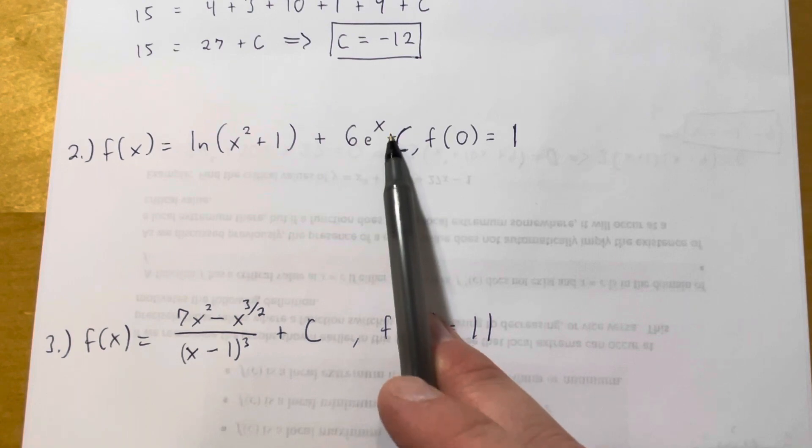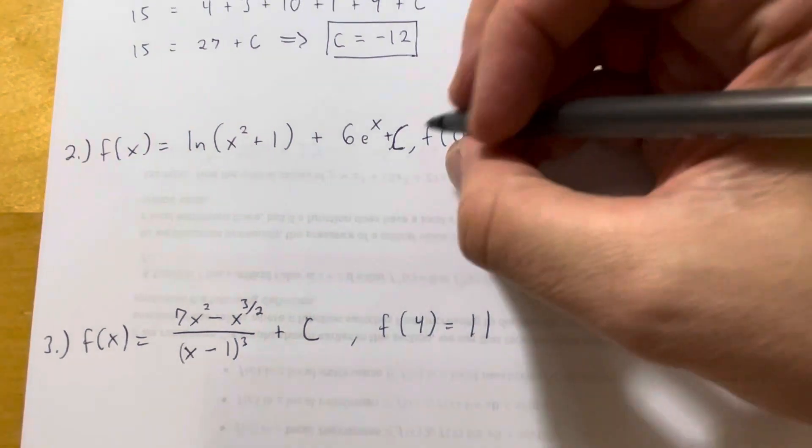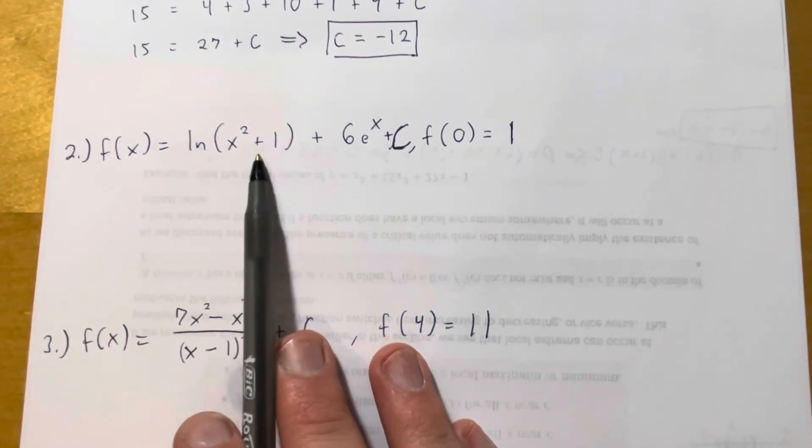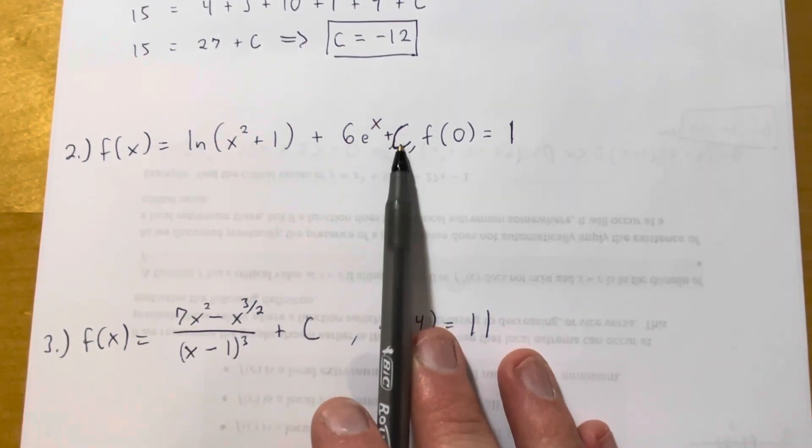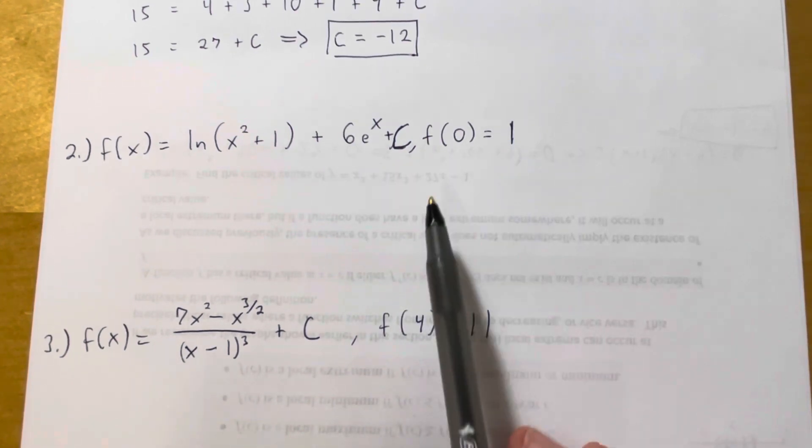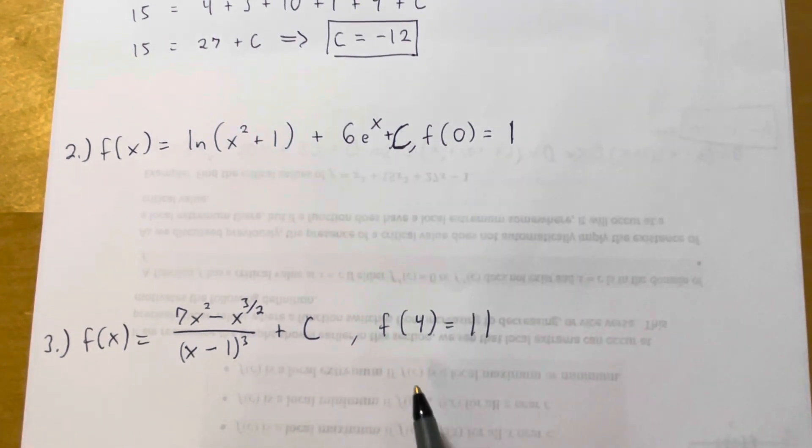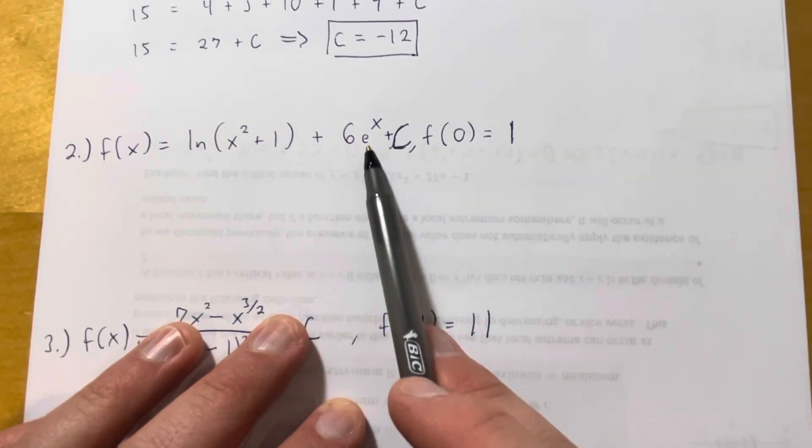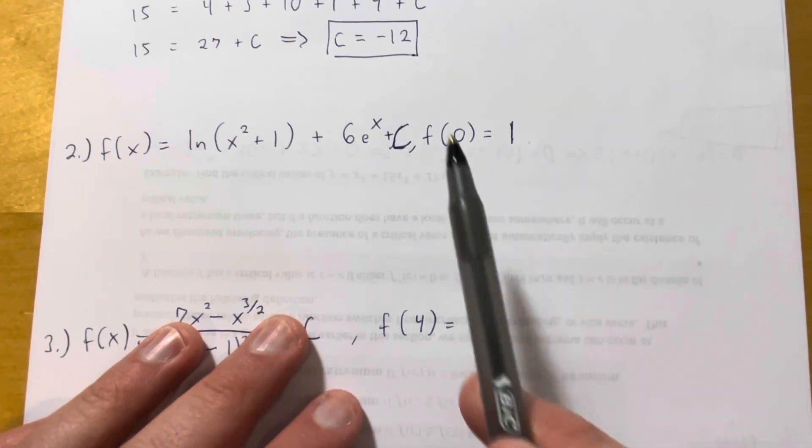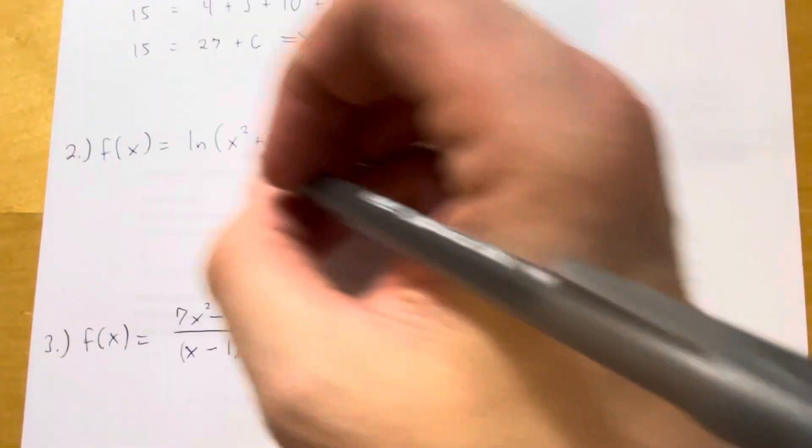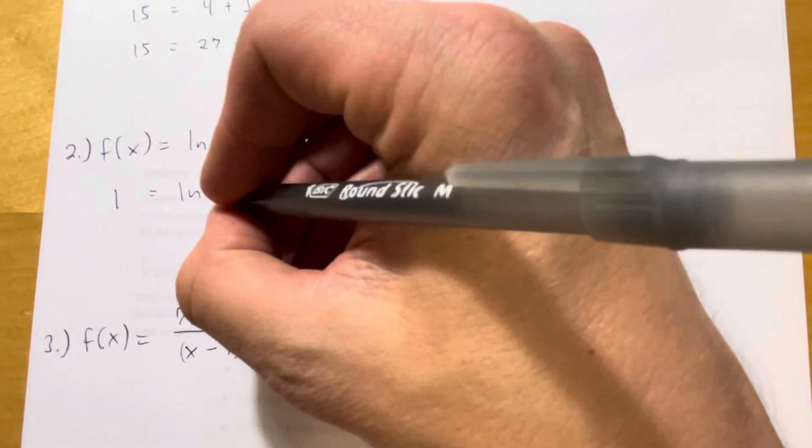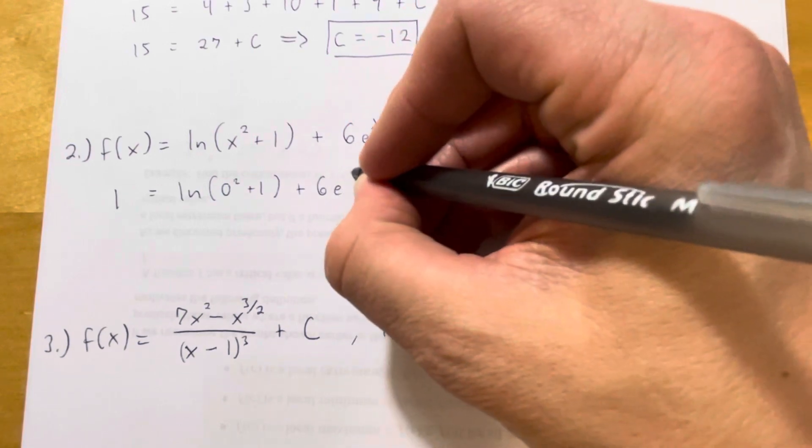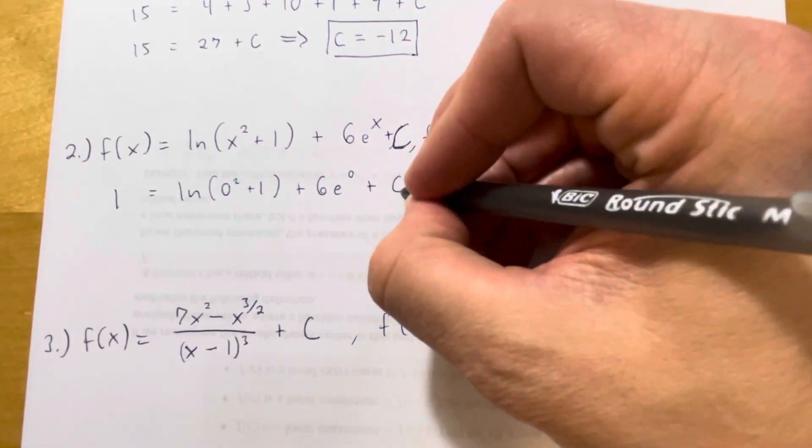It's a little bit sloppy in here because I almost forgot to write plus C, but that's a plus C right there. So this one says f of x is equal to the natural log of x squared plus 1 plus 6e to the x plus C. And then we have this initial condition, f of 0 is equal to 1. So same thing. I'm going to plug 0 into my function, set it equal to 1, and then use that to solve for C. So I'm going to put the 1 here. Natural log of 0 squared plus 1 plus 6e to the power of 0 plus C.